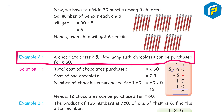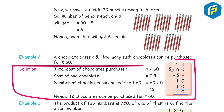Example 2: A chocolate costs Rs 5. How many such chocolates can be purchased for Rs 60? Solution: total cost = Rs 60, cost of one chocolate = Rs 5. Number of chocolates purchased = 60 ÷ 5 = 12. Hence, 12 chocolates can be purchased for Rs 60.